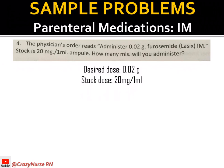Some people write 20 milligrams per ml without including '1 ml' because when we say ml it is understood to be 1 ml — meaning in every 1 ml of dilution there is 20 milligrams of furosemide. Either way, it means 1 ml.